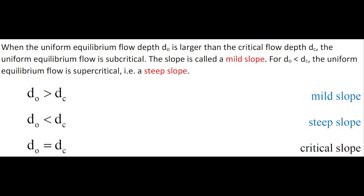When the uniform equilibrium flow depth, D0, is larger than the critical flow depth, DC, the uniform equilibrium flow is subcritical, and the slope is called the mild slope. For D0 less than DC, the uniform equilibrium flow is supercritical, and it is a steep slope.